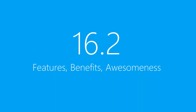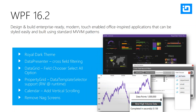In 16.2 for WPF, we continue to improve the styling story. We added the Royal Dark Theme — that beautiful eye-popping screenshot with the black background. It has its roots in the Metro theme but is designed for mouse-driven use rather than touch. You apply this theme once, all controls in the application get it, and your application will just pop. We also added cross-field filtering to the data presenter, a field chooser select-all for the data grid, updated the property grid with data template selector support, added vertical scrolling to the calendar, and removed the trial nag screens — replacing them with a simple watermark.